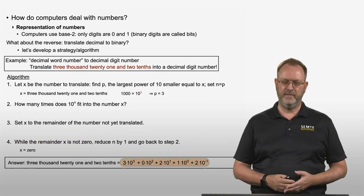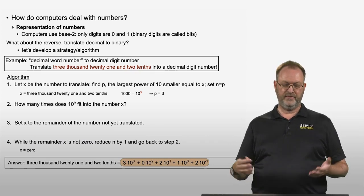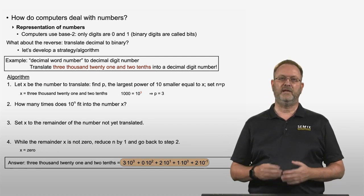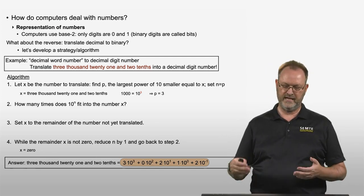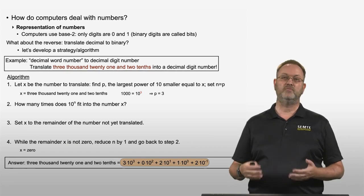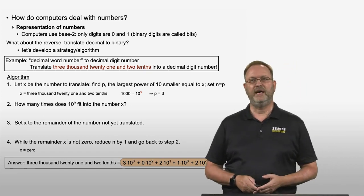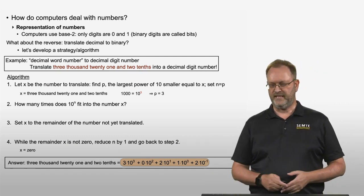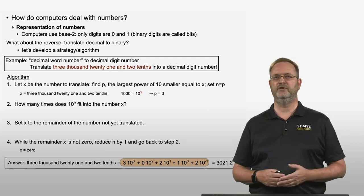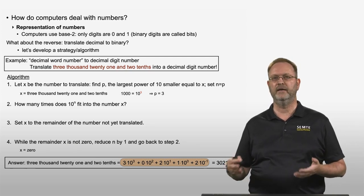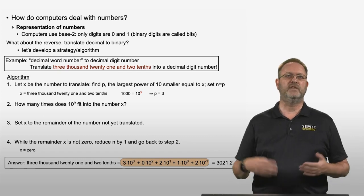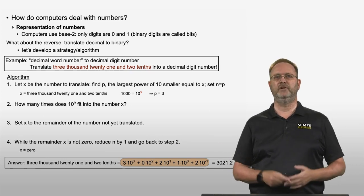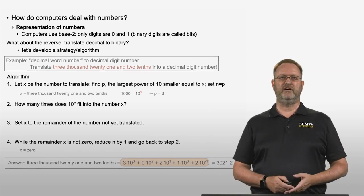Looking at the bottom, we have written the word number 3,021 and 2 tenths as: 3 times 10 to the power 3, plus 0 times 10 to the power 2, plus 2 times 10 to the power 1, plus 1 times 10 to the power 0, plus 2 times 10 to the power negative 1. Written as a decimal digit number, this translates into 3021.2.